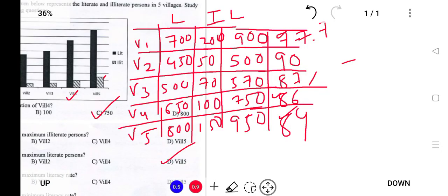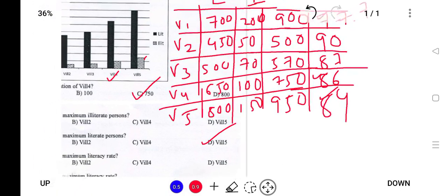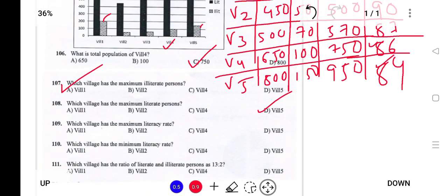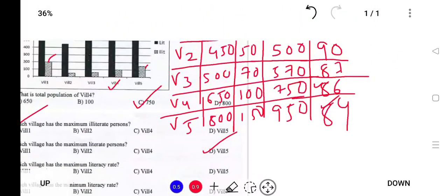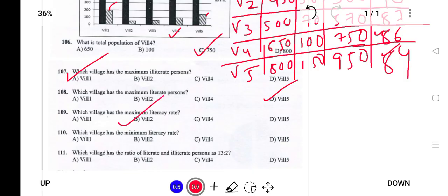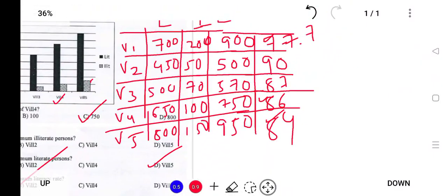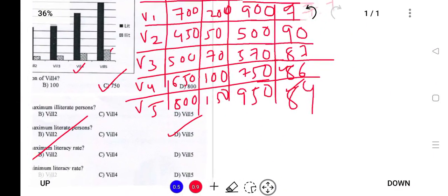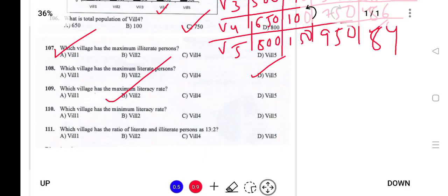Summary of literacy rates: Village 1 — 77.7%; Village 2 — 90%; Village 3 — 87%; Village 4 — 86%; Village 5 — 84%. So, Village 2 has the maximum literacy rate at 90%, and Village 5 has the minimum literacy rate at 84%.